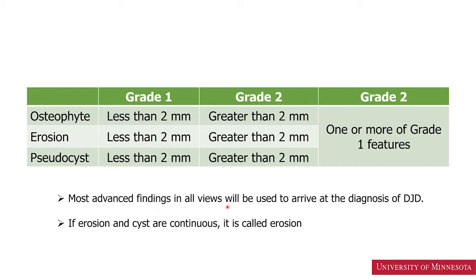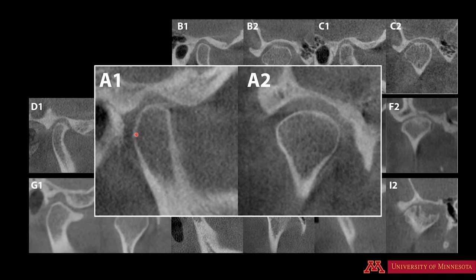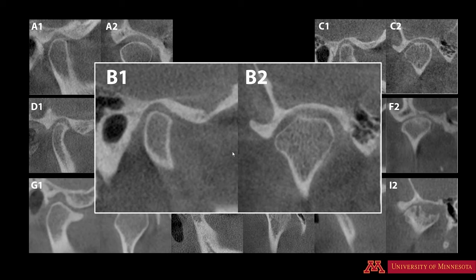For our classification, we used the most advanced findings in all views to arrive at the diagnosis. Here is an example of the degenerative changes published in Dental Clinics of North America. Images A1 and A2 are from the same patient — corrected sagittal and corrected coronal. On A1 and A2, we see the margin of the condyle is smooth, round, well corticated, without any loss of continuity, so we'll call this joint normal.